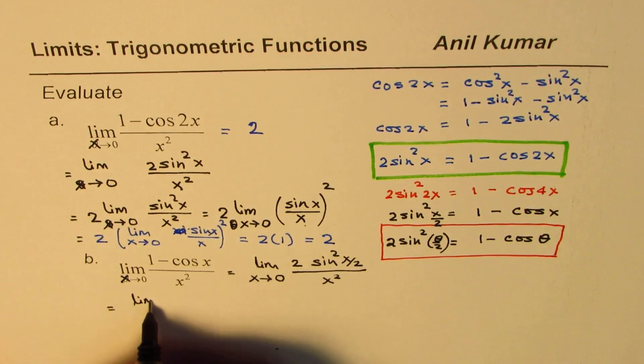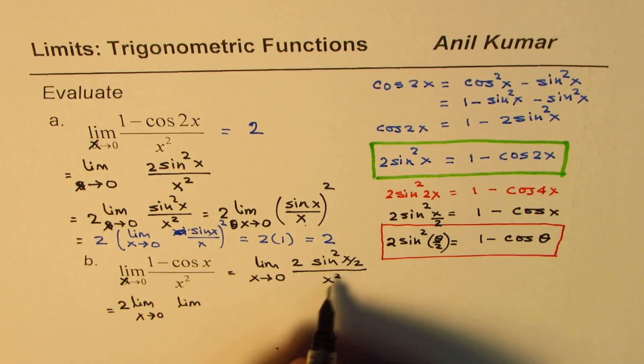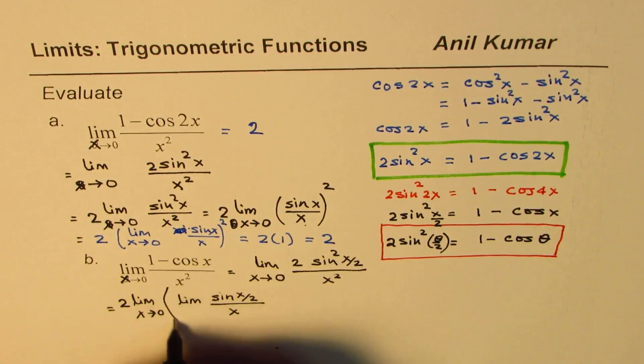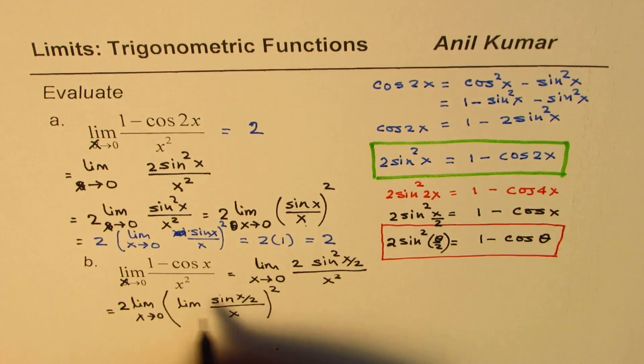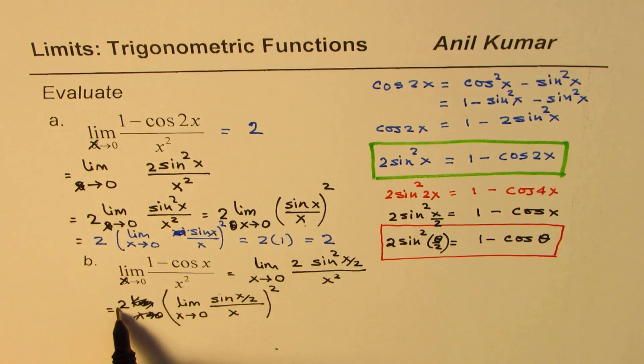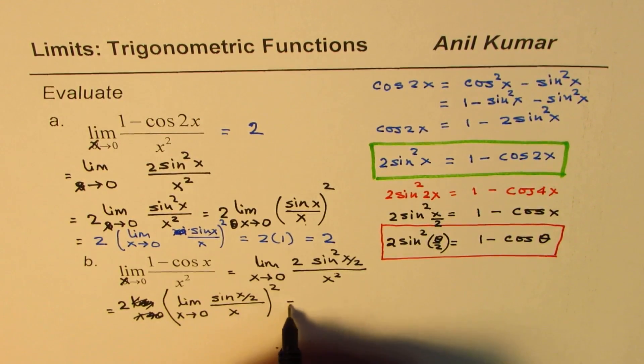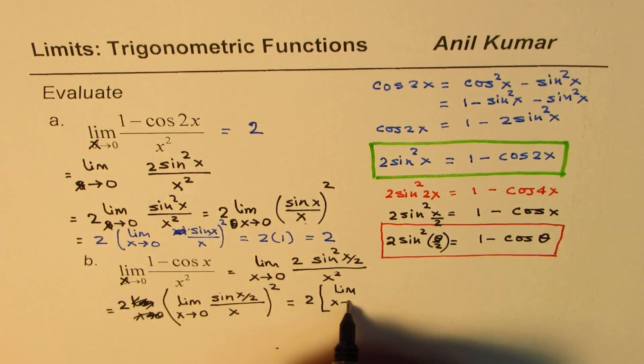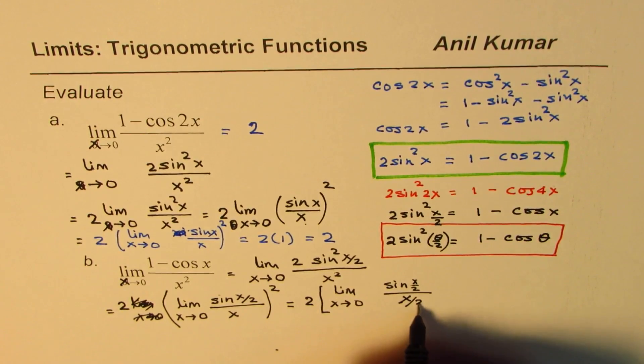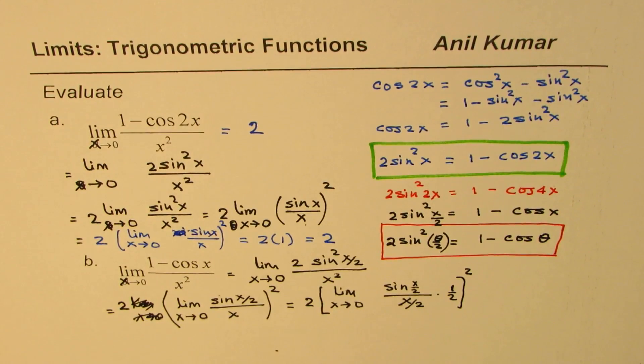Now we could write this as limit x approaches 0. This 2 is constant, I'll bring it out. And what we have here is limit, and we have sin(x/2) over x whole squared. So basically I took 2 outside, wrote 2 here, limit of this particular function whole square. Now we know limit of sin(x/2) over x/2, that is 1, not x. So let's change this. So we'll have 2 times limit x approaches 0. So I'll write this as sin(x/2) over, if I want to divide this by x/2, I have to multiply this also by half. So I'm dividing this by 2, I have to divide numerator also by half, whole squared.